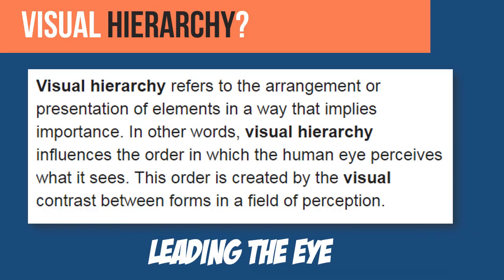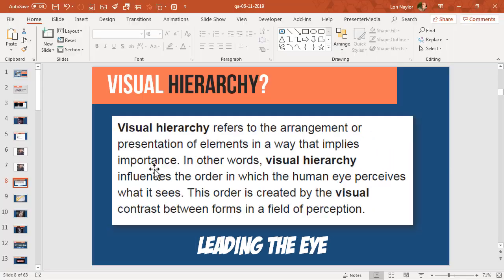Visual hierarchy is the fancy schmancy term for what I call leading the eye, and it basically states that the arrangement and presentation of elements in a way that implies importance. In other words, visual hierarchy influences the order in which the human eye perceives what it sees. Essentially, when we do something like bold a word against other content, what happens?